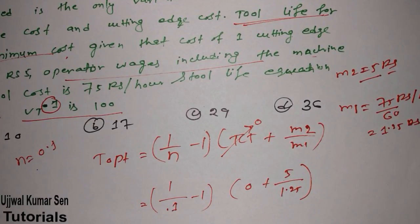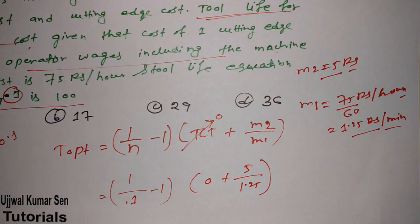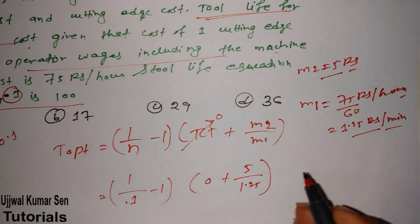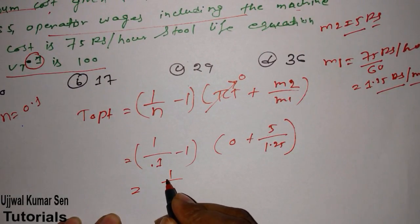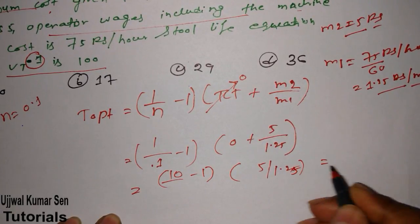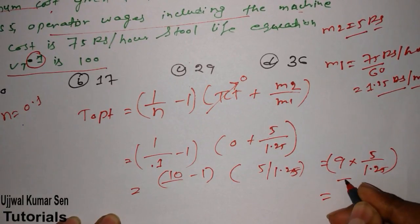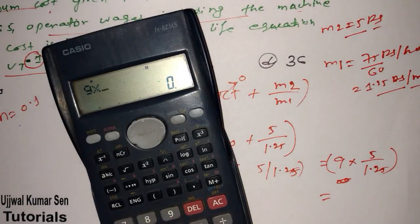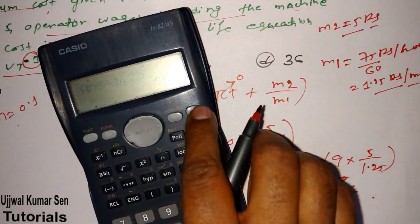We don't have given any value of TCT, so TCT equal to 0, just put 0. M2 we have given 5 and M1 is 1.25. I hope till now what we have done, you are getting each and everything. We are considering tool changing time as 0 because it's not given in the question. We have taken M2 as 5 rupees as it is. We have given M1 as 75 rupees per hour. We converted rupees per hour into rupees per minute to get the right answer. We got 1.25 rupees per minute. So 1 by 0.1 means 10, minus 1, 5 by 1.25. This becomes 9 into 5 by 1.25. That is 45 divided by 1.25, which is 36.